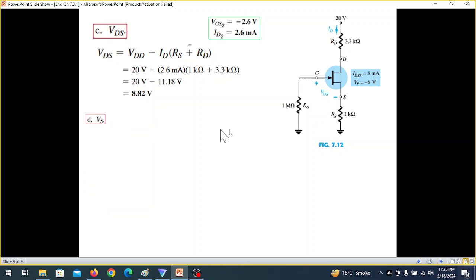The next is VS. This is S. So VS is actually the voltage drop here. So we can say that VS is IDRS, which is 2.6 milliampere into 1 kilo is equal to 2.6 volt.